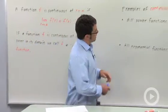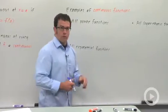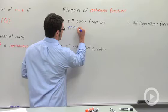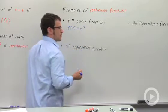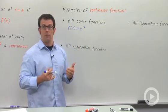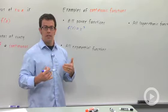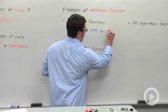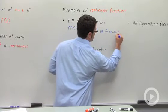Let's take a look at some examples. All power functions are continuous. For example, f(x) = x³. That's a power function. It's defined for all real numbers, so it's continuous everywhere it's defined, continuous on the interval from negative infinity to infinity.